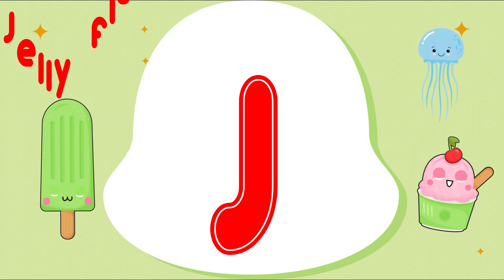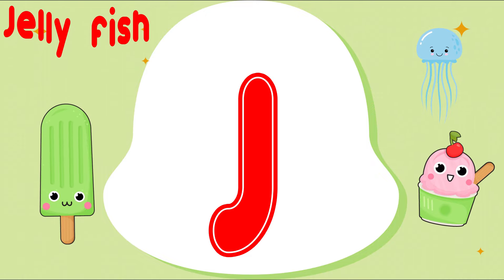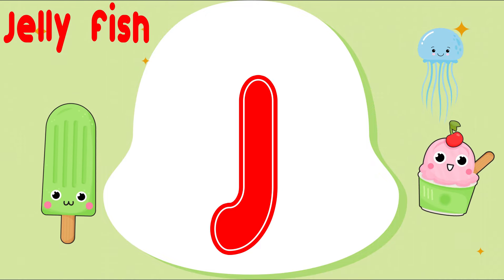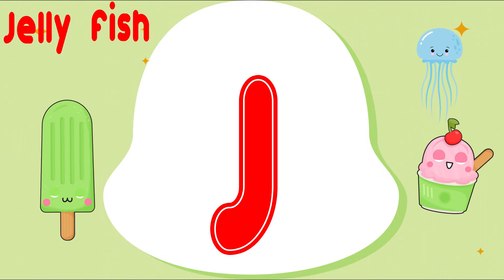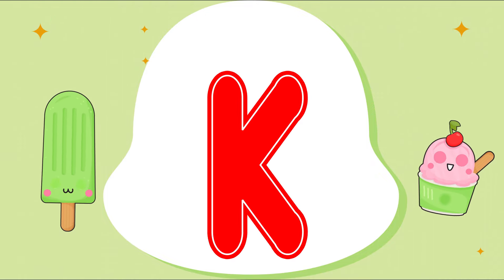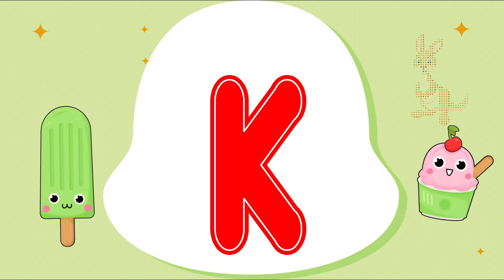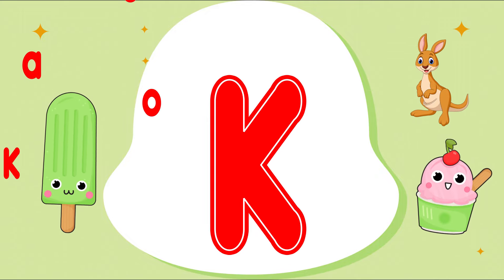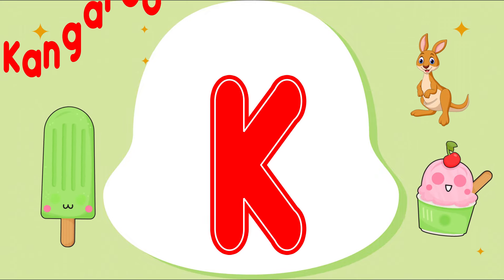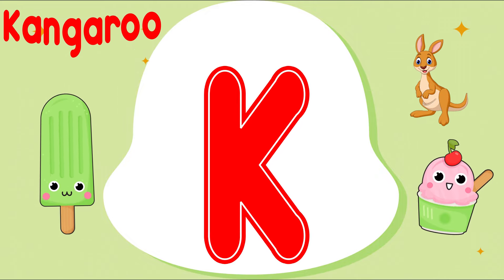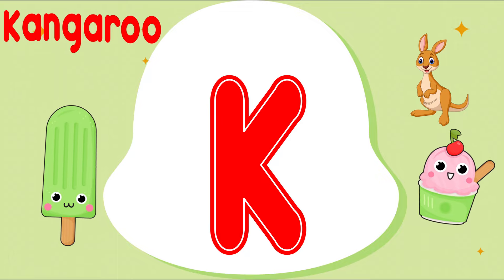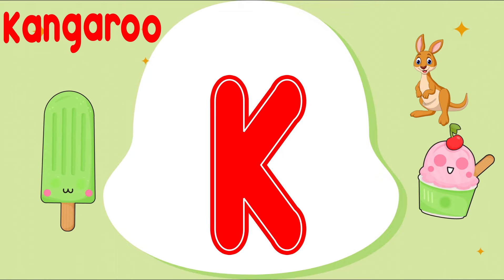Iguana. I, Iguana. J is for Jellyfish. J, J, Jellyfish. J, J, Jellyfish. J, Jellyfish. K is for Kangaroo. K, K, Kangaroo. K, K, Kangaroo. K, Kangaroo.